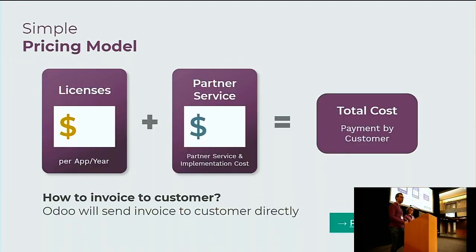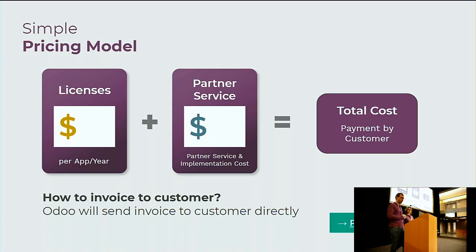From the perspective of the client, they will be paying for various things. The client pays for the licenses of Odoo — the applications and the users they take — directly to Odoo. They will also pay the partner for services provided, such as implementation, training, and deployment. The sum of those will be the total cost of the entire system for the customer.